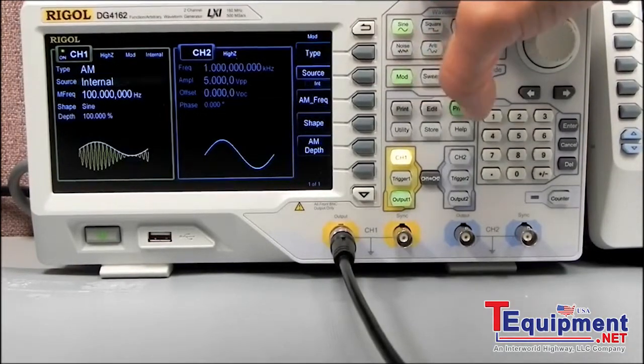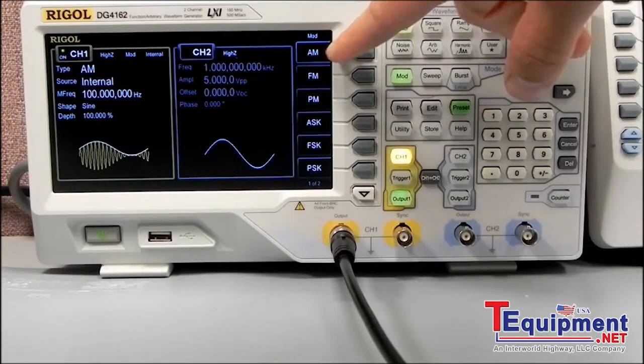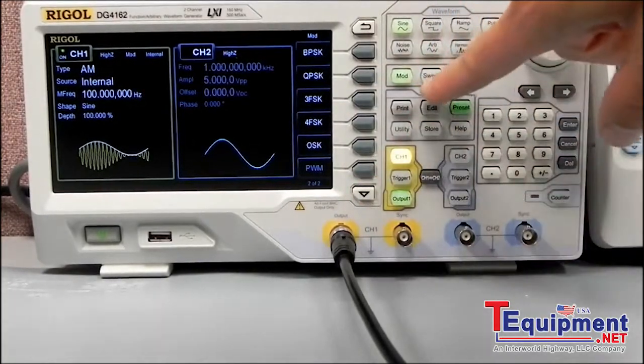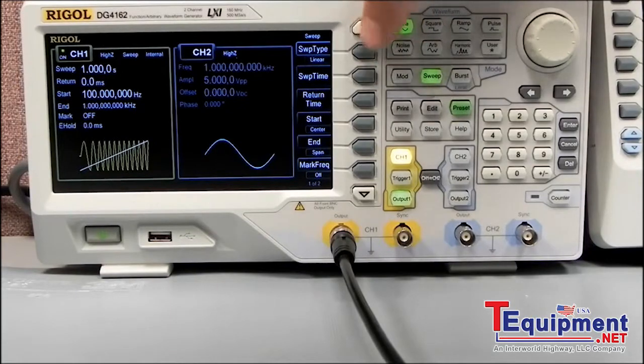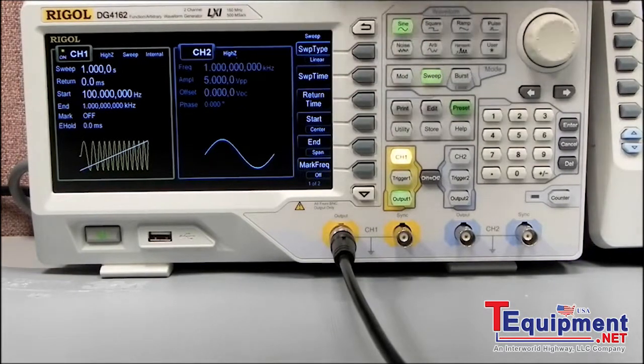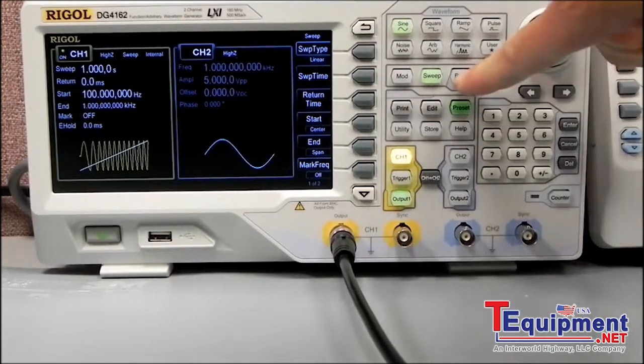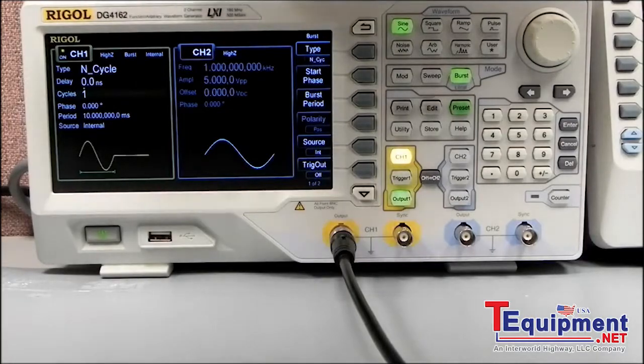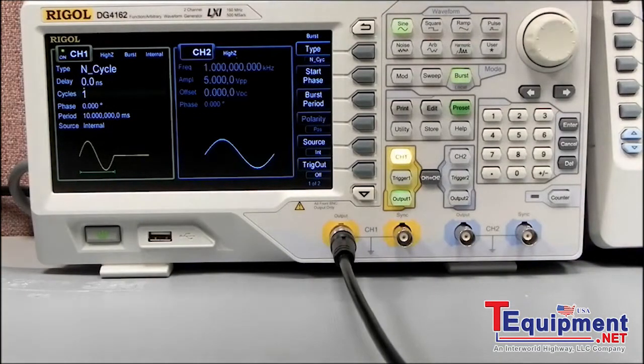Another function that we have is modulation. Tons of types. I won't go through all of them, but AM, FM, phase modulation, etc. There's two pages of them. And then we also have sweep capability, linear log. And then you can also perform the sweep time. Lots of parameters to set in that regard. Also in burst mode. So you can create packets of data or packets of waveforms and have those burst at a specific rate.